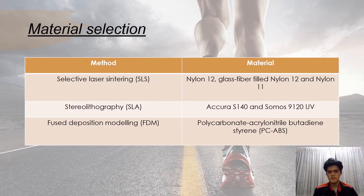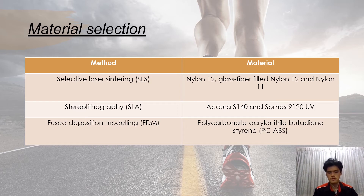There are different methods using different types of materials. For Selective Laser Sintering, we use Nylon PA12, Glass Fiber Filled Nylon PA12, and Nylon 11. For Stereolithography, we use Accura SL140 and Somos 9120 UV. For Fused Deposition Modeling, we use PC-ABS. Then I will pass to my teammate Seo Chun Seng to continue with the forming strategy.